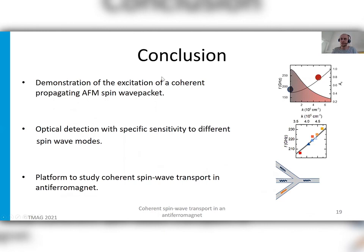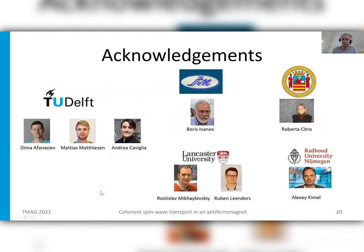This brings me to the conclusions of this work, in which we demonstrated the excitation of a coherent propagating antiferromagnetic spin wave packet by using strongly confined excitation. We've used an optical detection method which has specific sensitivity to different spin wave modes, and in this way we could map out part of this dispersion to confirm both the sensitivity of the detection method and to confirm the presence of this wavelength. Thirdly, to refer back to this idea of antiferromagnetic magnonics, this is a way or a platform to study coherent spin wave transport and also to study how ultra short pulses of light could be used in this process of generating and detecting these phase coherent waves.